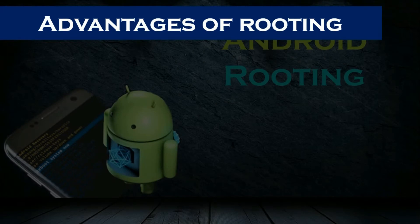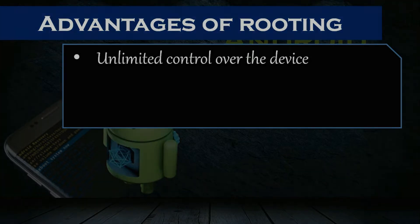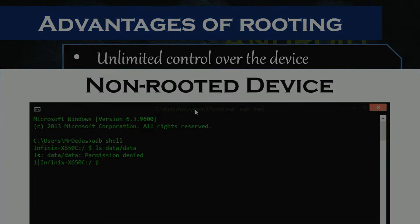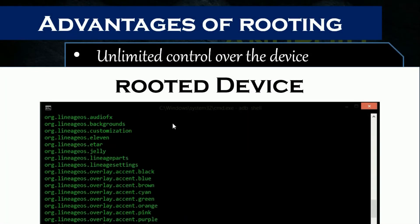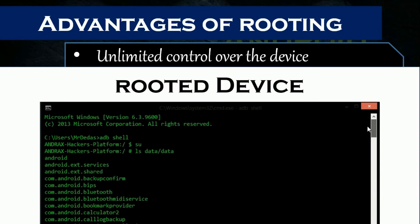Advantages of Rooting. By default, we cannot fully access the device as a normal user. After rooting an Android device we get full control over the device. A normal user without root access cannot see the listing of installed packages inside the /data/data directory. As root users, we can explore the complete file system, modify system files, and so on. A root user can see the listing of installed packages inside the /data/data directory.